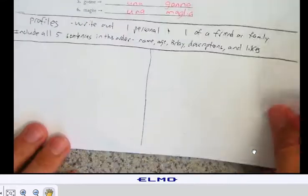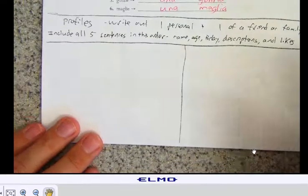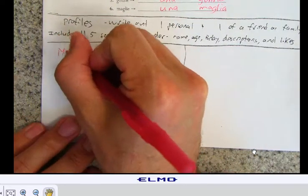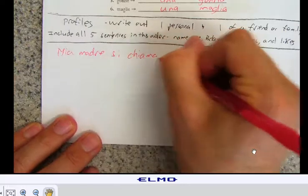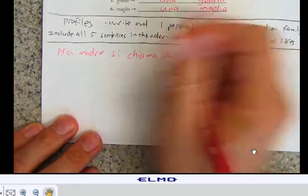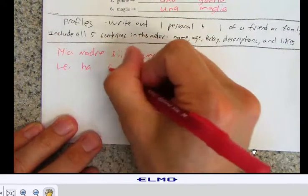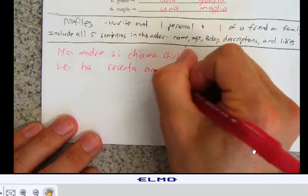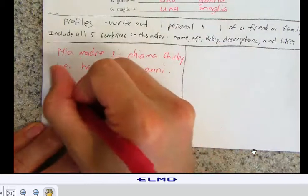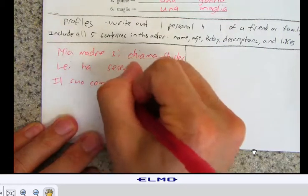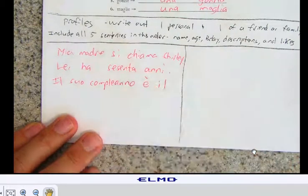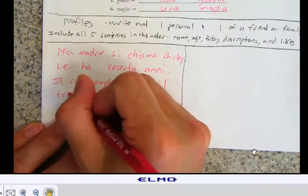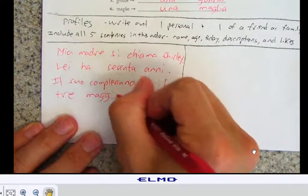Alright. When it comes to writing profiles, last section. Let's say I want to write a profile about my mother. I would say, mia madre si chiama Shirley. Okay. Her age. Lei ha sesanta anni. She is 60 years old. Her birthday. Il suo compleanno, her birthday, e il tre maggio. Birthday is the third of May.